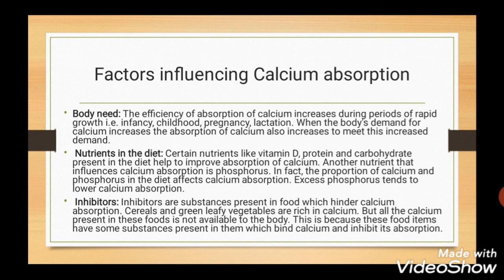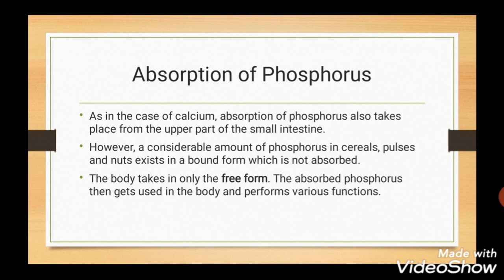The third factor is inhibitors. Just as certain substances increase the absorption of calcium, there are also inhibitors — substances present in food — which hinder calcium absorption. Cereals and green leafy vegetables are rich in calcium, but all the calcium present in these foods is not available to the body because these food items contain substances which bind calcium and inhibit its absorption. Regarding absorption of phosphorus, it takes place from the upper part of the small intestine. A considerable amount of phosphorus in cereals, pulses and nuts is in a bound form which is not absorbed; the body can only take up the free form.